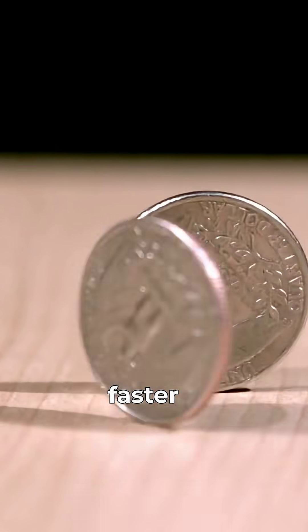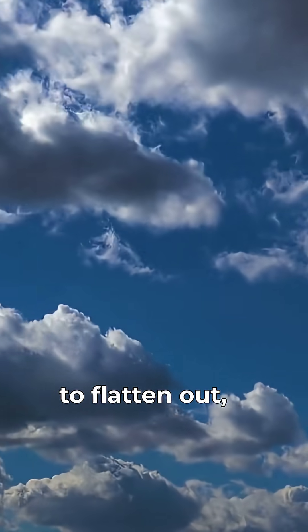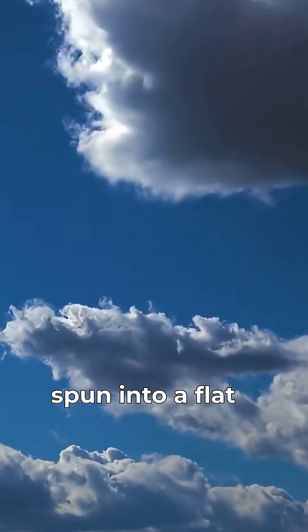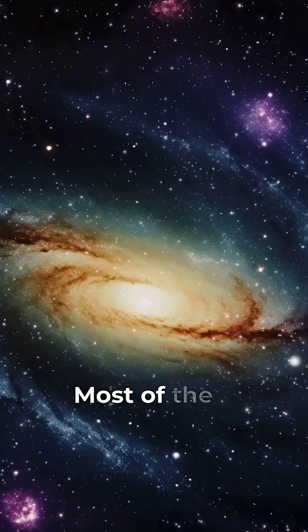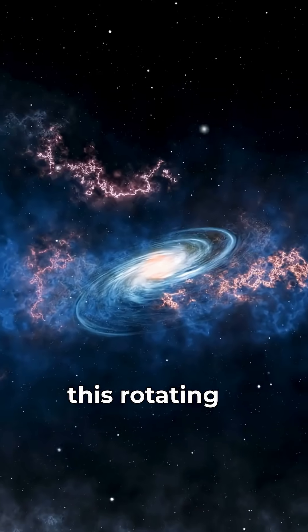The faster spin caused the cloud to flatten out, much like pizza dough being spun into a flat circle. Most of the material settled into this rotating disk.